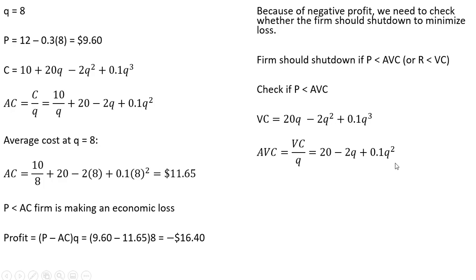Now plugging 8 into this equation, q equals 8, plugging 8 into average variable cost, we see that average variable cost is $10.40. So this firm should shut down. Price of $9.60 is less than average variable cost of $10.40. The firm would actually minimize its losses by shutting down.